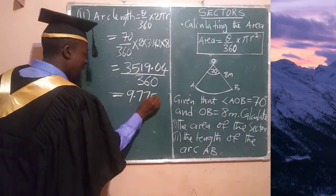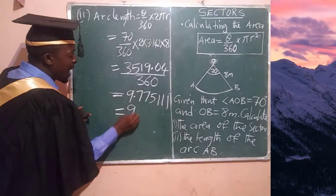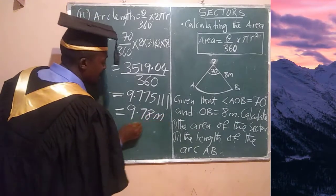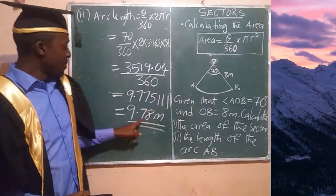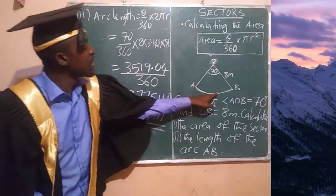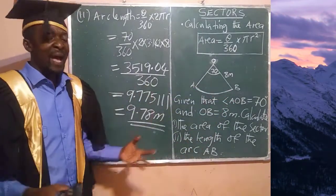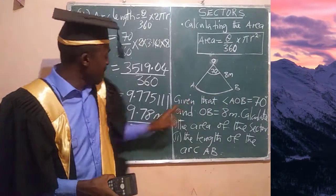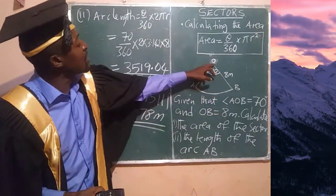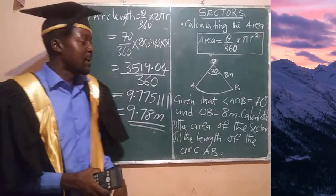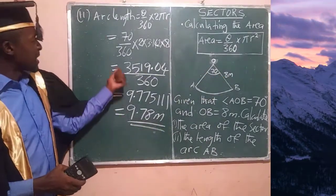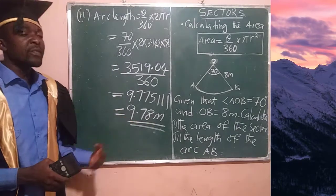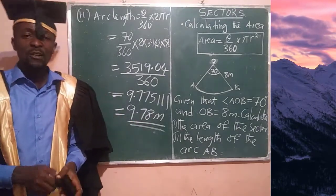After dividing by 360, we get 9.775111, which we round off to 9.78 meters — that is the length of arc AB. Note that if asked for the perimeter of the sector, you would add this arc length of 9.78 meters to the two radii, but in this question we are only asked for the arc length, which is 9.78 meters.